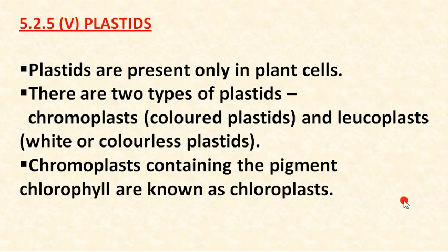Plastids are present only in plant cells — this is a very important point. There are two types of plastids: chromoplast, meaning colored plastid which has color, and leukoplast, which is colorless or white. Keep in mind: chromo means color and leuko means colorless.